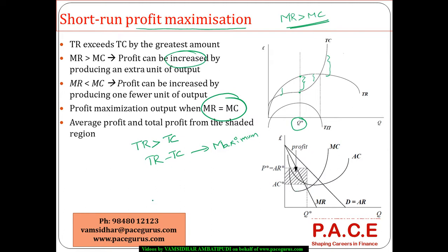In a typical scenario, the AR curve is the same as the demand curve. The marginal revenue curve falls even more steeply. The marginal cost curve initially falls and then keeps going up. The average cost curve also falls as long as marginal cost is below it, and once marginal cost starts going up, the average cost rises too. The profit-maximizing output is where the marginal cost curve cuts the marginal revenue curve.